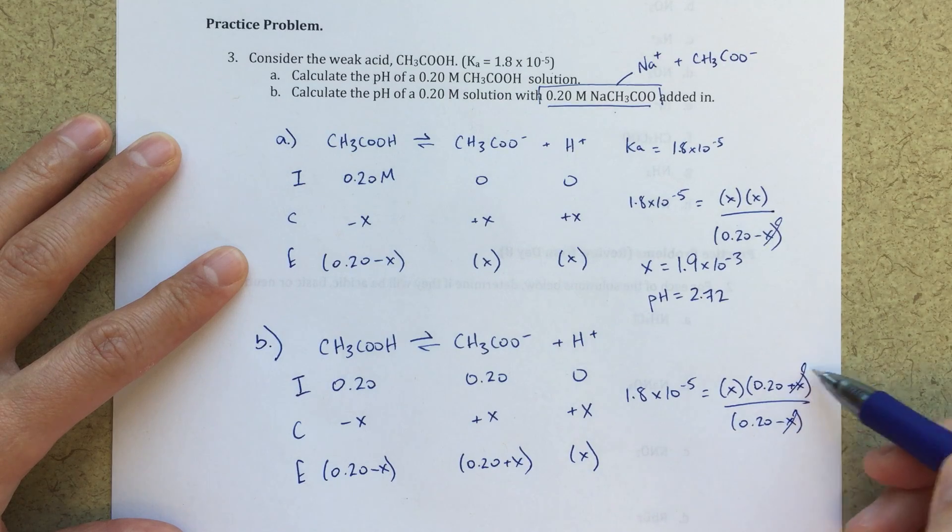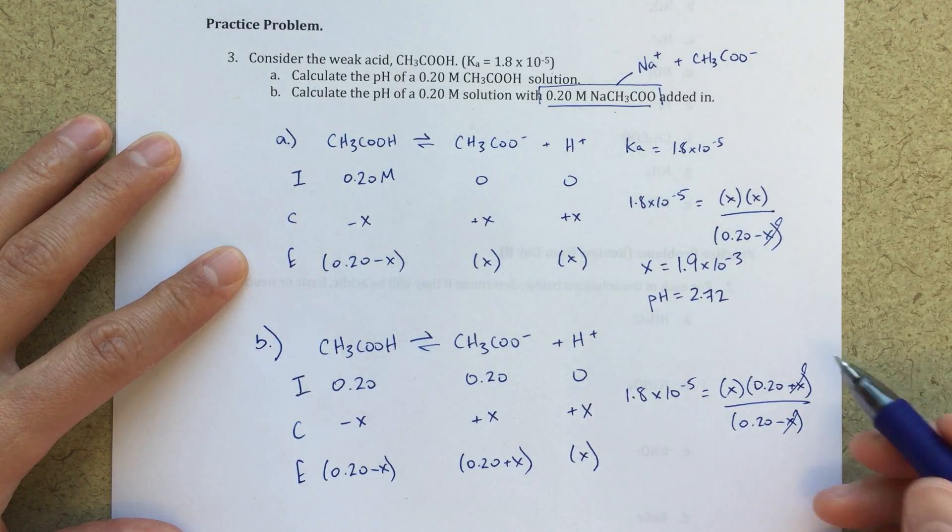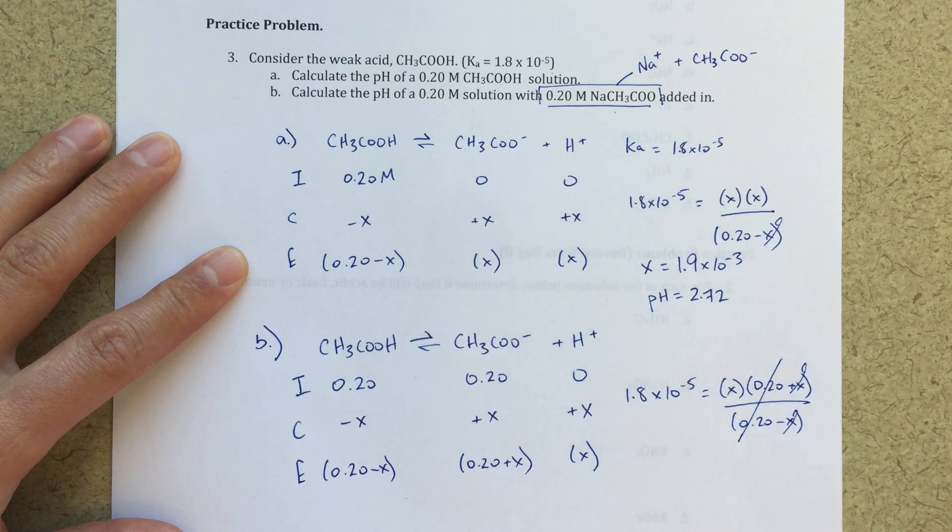Now, here we see something pretty interesting. This minus X term and this plus X term, those are both going to be negligible. So now this 0.2 and 0.2, those will cancel out. And X is just going to equal 1.8 times 10 to the minus 5th. It's going to equal the Ka.